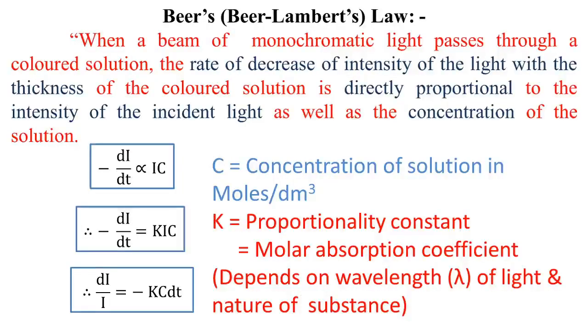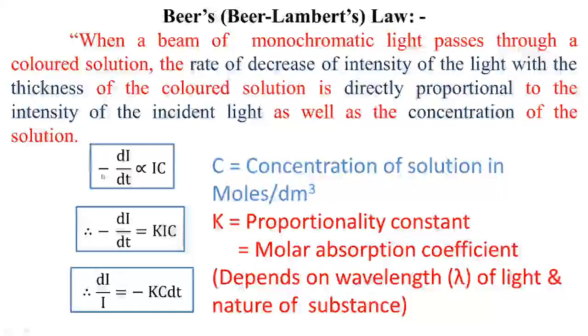Beer's Law can be stated as: when a beam of monochromatic light passes through a colored solution, the rate of decrease of intensity of the light with the thickness of the colored solution is directly proportional to the intensity of the incident light as well as the concentration of the solution.